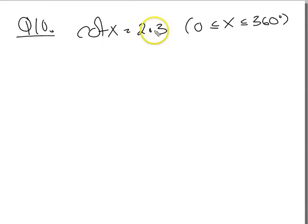Okay guys, let's have a look at question 16. We've got cot x equals 2.3. As we know, cot is 1 over tan, so let's put that in because we need to simplify this equation.